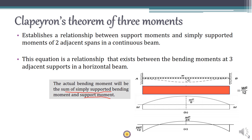The support moment can be thought of as a fixed moment. The simply supported moment is calculated by taking the given span, assuming it to be a simply supported beam, and calculating the bending moment for that single span — that is called the simply supported bending moment.